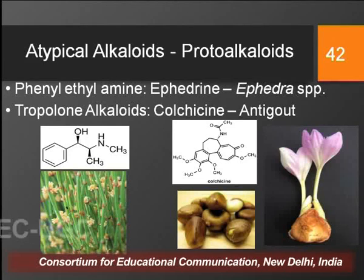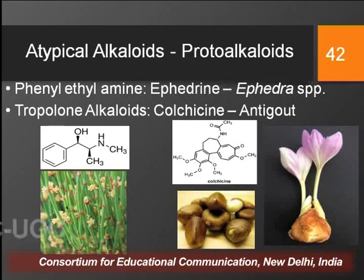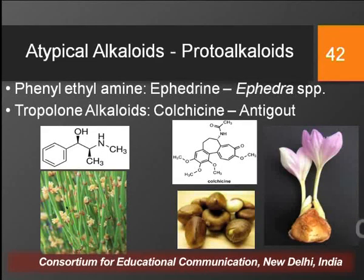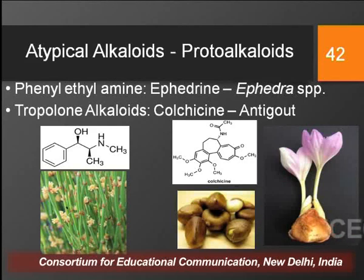The second class, tropolone alkaloids, has a seven-membered tropolone ring, as seen in the structure of colchicine. Colchicine is obtained from the corms of Colchicum autumnale and is largely used for its anti-gout properties. You can see in the picture the corms of Colchicum and the beautiful plant with purple flowers. These are the two major classes of proto alkaloids.